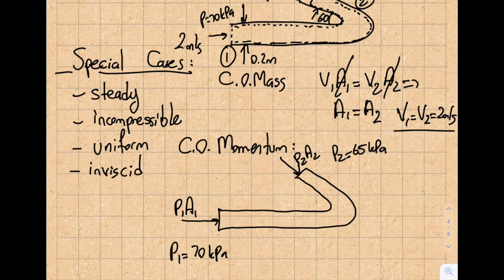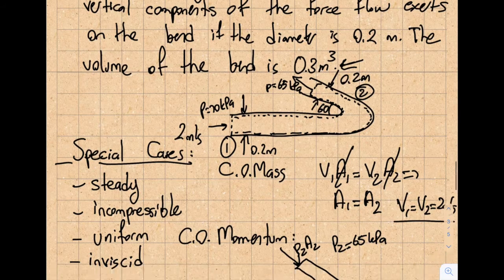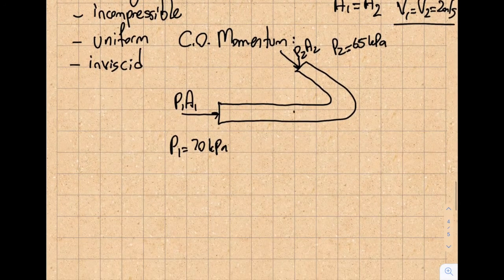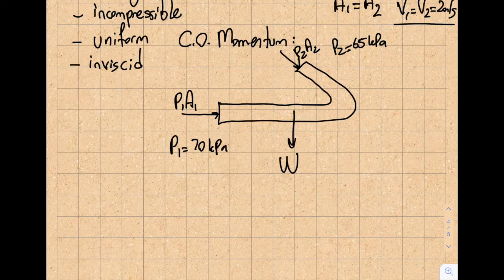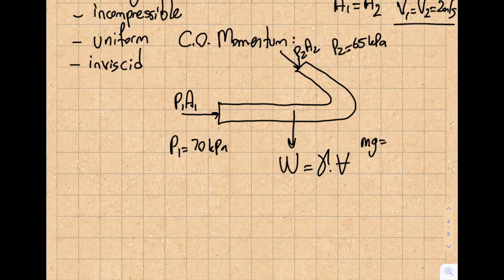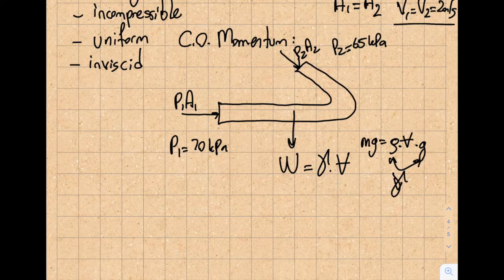Third are body forces (weight). The volume is given, so I can calculate the weight of the fluid in the control volume — not the weight of the solid bend. This is the specific weight times the volume, which equals ρgV (same as mg written in terms of density). Now I draw the free body diagram and proceed to the extraction.